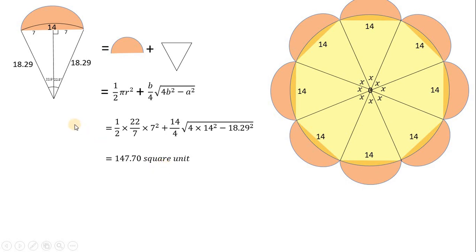We know the sum of these 8 sections forms this flower. So the area of the flower is 8 times 147.70, which equals 1181.60 square units. The area of this flower is 1181.60 square units. This is the answer.